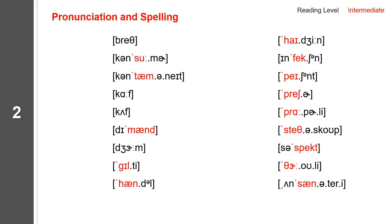Okay, now let us practice vocabulary. Read the first one: breath. Breath spells B-R-E-A-T-H. But if you spell it B-R-E-A-T-H-E, it becomes a verb and it sounds breathe. So this one is voiced and this one is voiceless. Say breath.